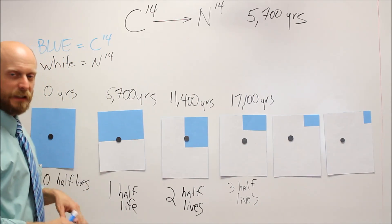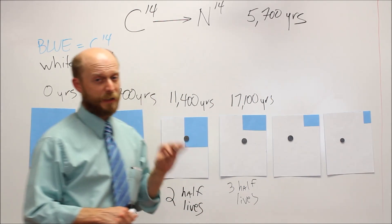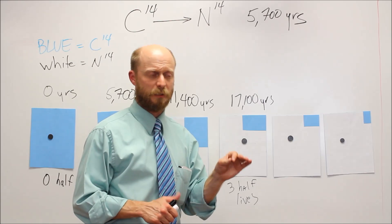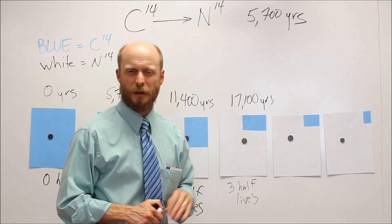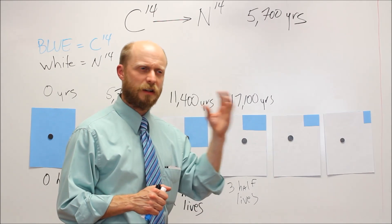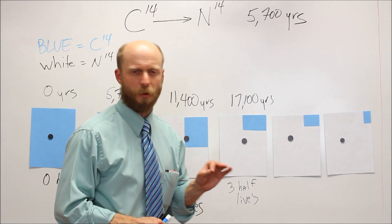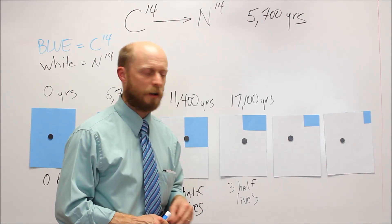And that rate is constant 5,700 years, and that will continue on until you will never get rid of the carbon-14. There will always be some left, but we'll get to a point down the road, I think they're usually like 50, 60,000 years is kind of too old. Anything older than that, you can't use carbon-14 to date it because there's just so little of it left. It's very hard to measure.